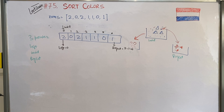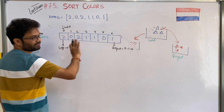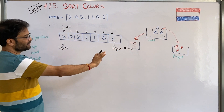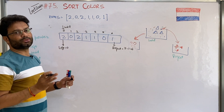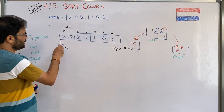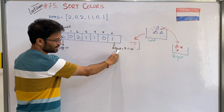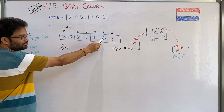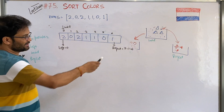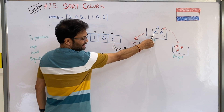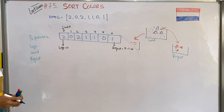Whenever you get the number 2, you have to throw it to the right side. When you get a 0, throw it to the left side. If you get a 1, no need to do anything. I am repeating again: if you get the higher number 2, swap toward the right pointer; if you get 0, throw to the left side; if you get 1, no need to do anything. For 3 kinds of items: one item goes left, another item goes right, and don't do anything for the third item.